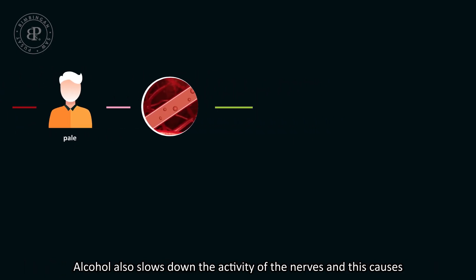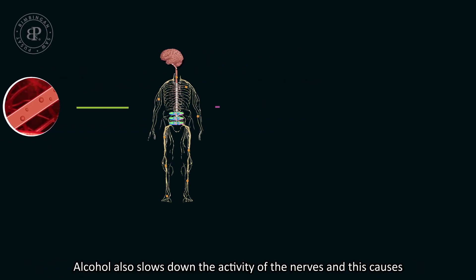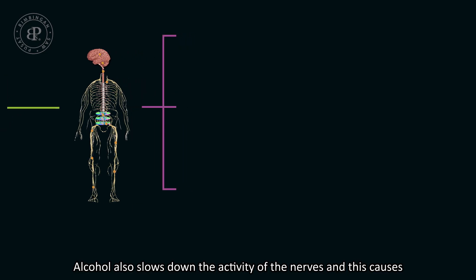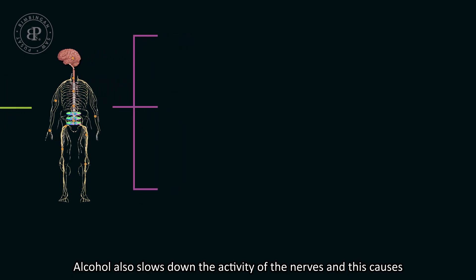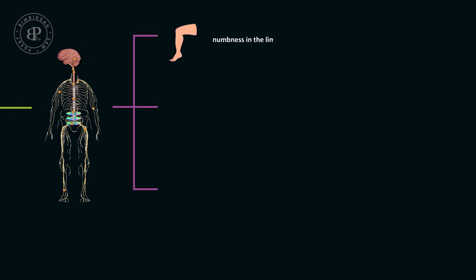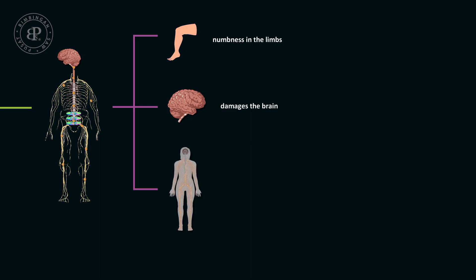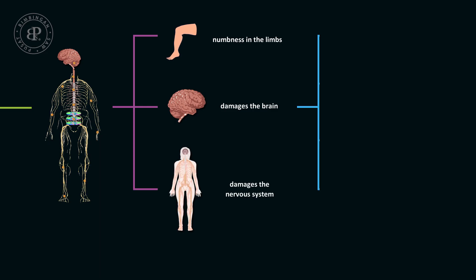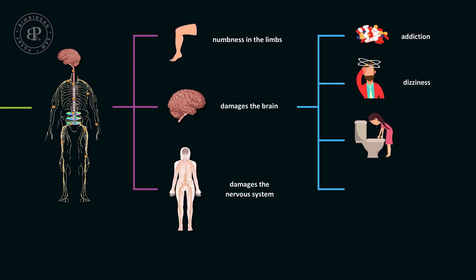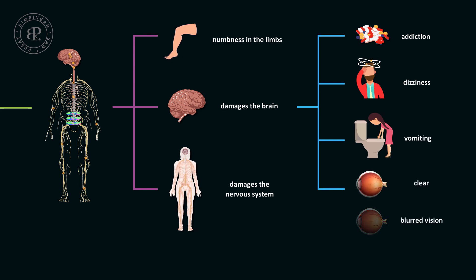Alcohol also slows down the activity of the nerves, causing numbness in the limbs. It damages the brain and the nervous system, and causes addiction, dizziness, vomiting, and blurred vision.